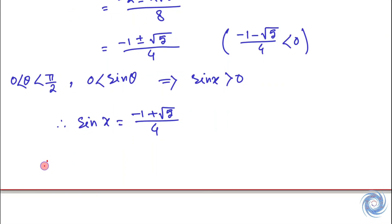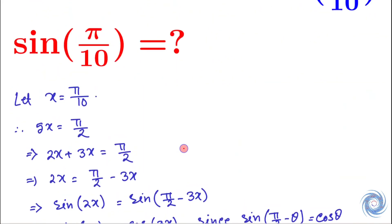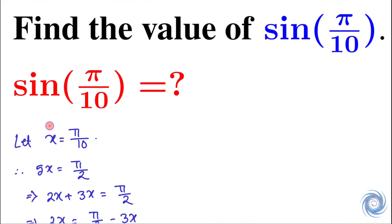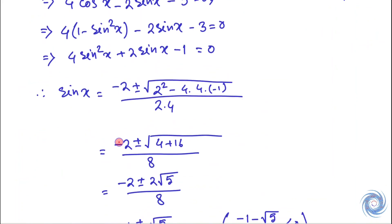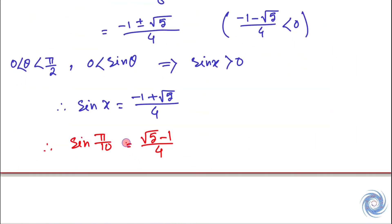So finally we have: we are supposed to find the value of sin pi over 10, and here we have sin pi over 10 equals root 5 minus 1 over 4. So we are done. Thank you.